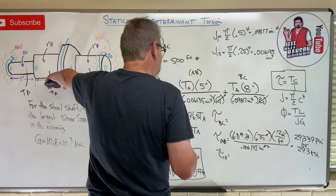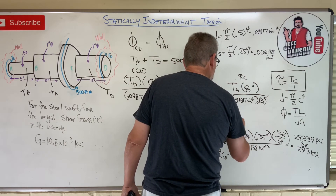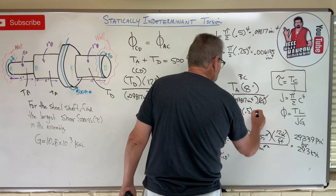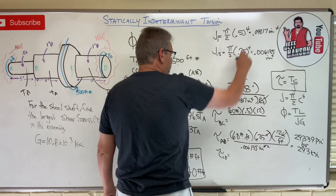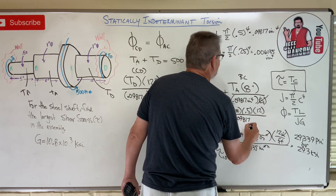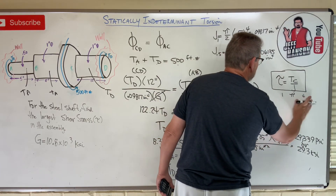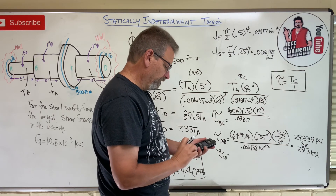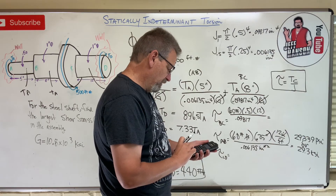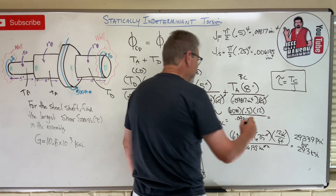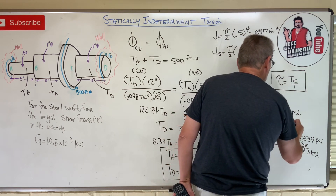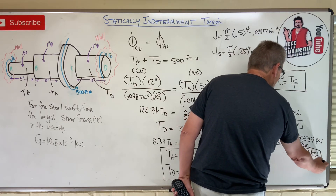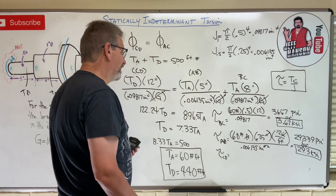For section BC: same torque TA = 60 ft-lb, but now it's the fat 1-inch diameter section, so C = 0.5 inches and J = 0.09817 in^4. tau_BC = (60 × 0.5 × 12) / 0.09817 = 360 / 0.09817 = 3,667 PSI, or 3.67 KSI. That section doesn't have nearly as much shear stress.